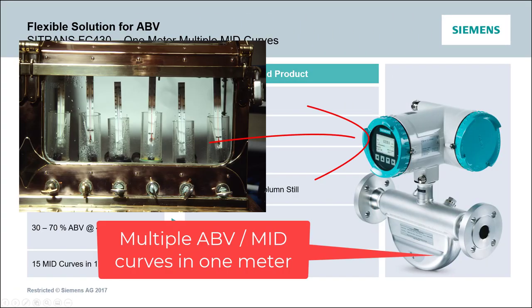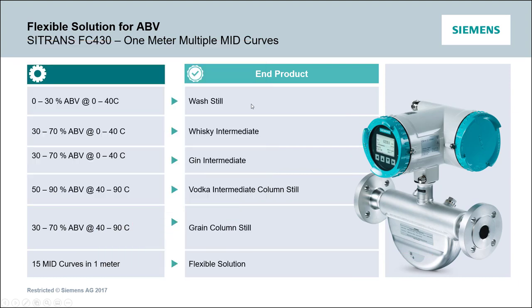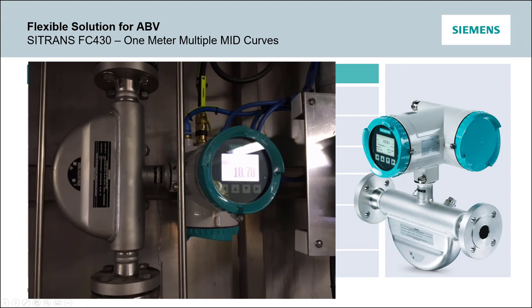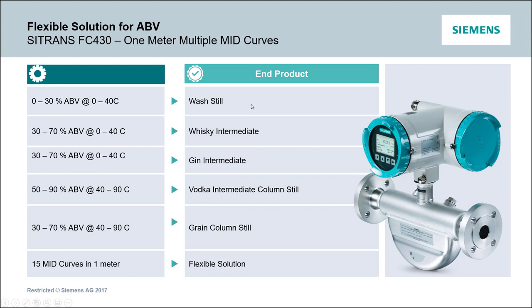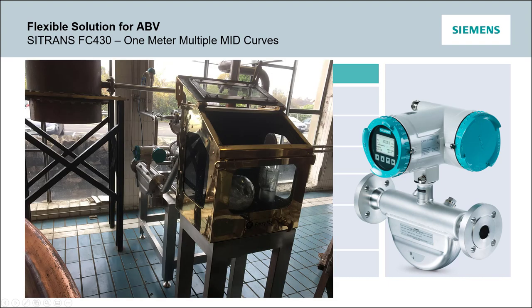The final part is to have a meter flexible enough to have multiple ABV curves programmed into it. From the menu you can select the ABV curve you require for your process, so you can have one meter for all of your distilling applications. One of the nice additional things we can do with a coriolis meter is totalize the ABV — we're monitoring the flow rate of ABV, not just the percentage alcohol. If you are filling road tankers and being taxed on the ABV, this technology can tell you exactly how much alcohol has gone into your road tanker.